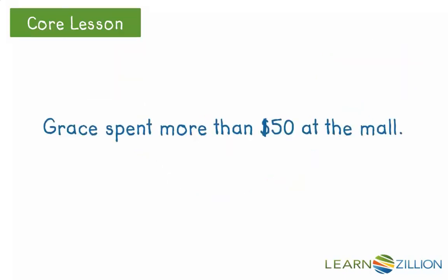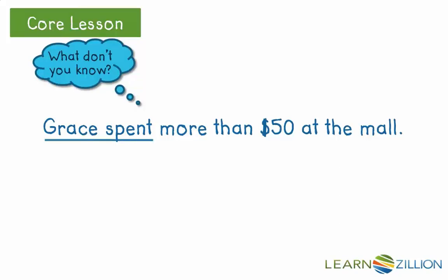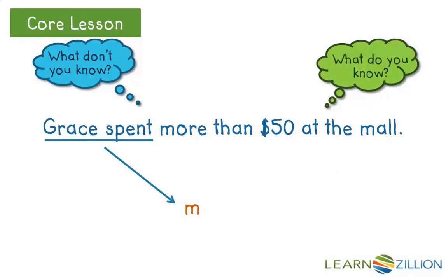So now we're back to our situation: Grace spent more than $50 at the mall. How could we represent this situation as a number sentence? Let's start by asking: what don't we know? We don't know how much money Grace actually spent at the mall. I will pick m to stand for the amount of money that Grace spent. We know that she spent more than $50, so by using an inequality, we insert a greater than symbol to show that m is more than 50.